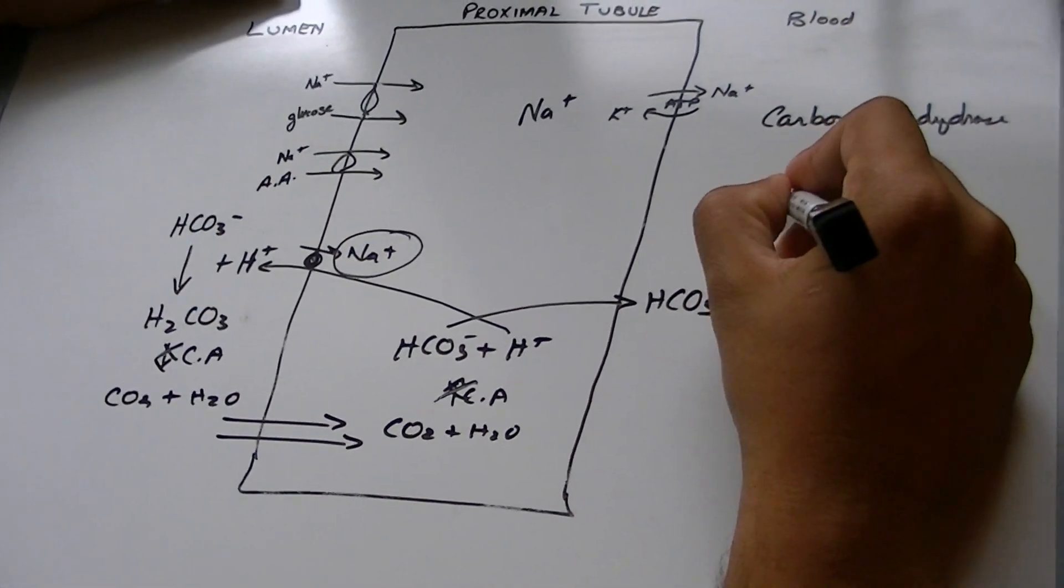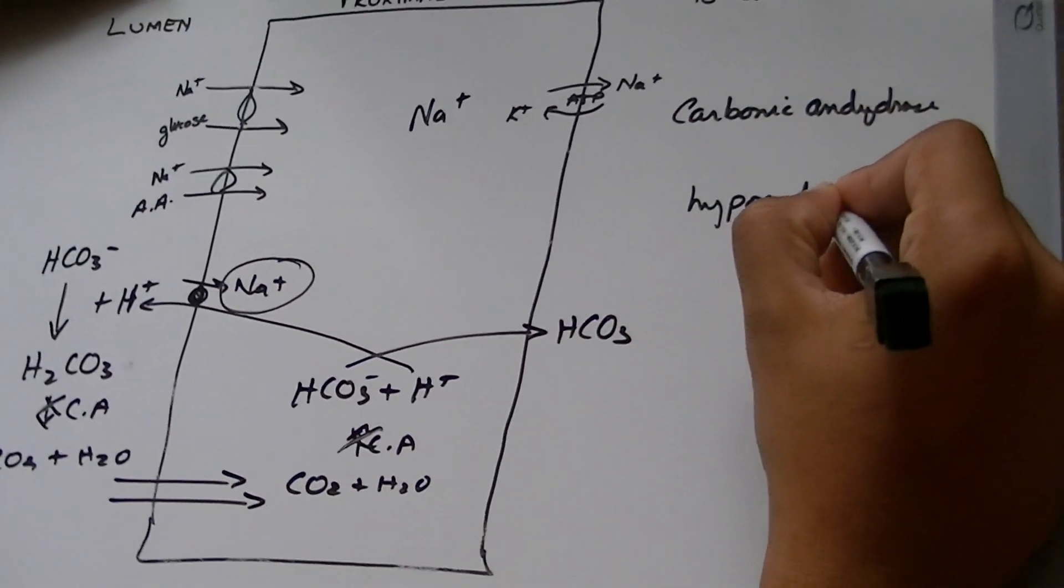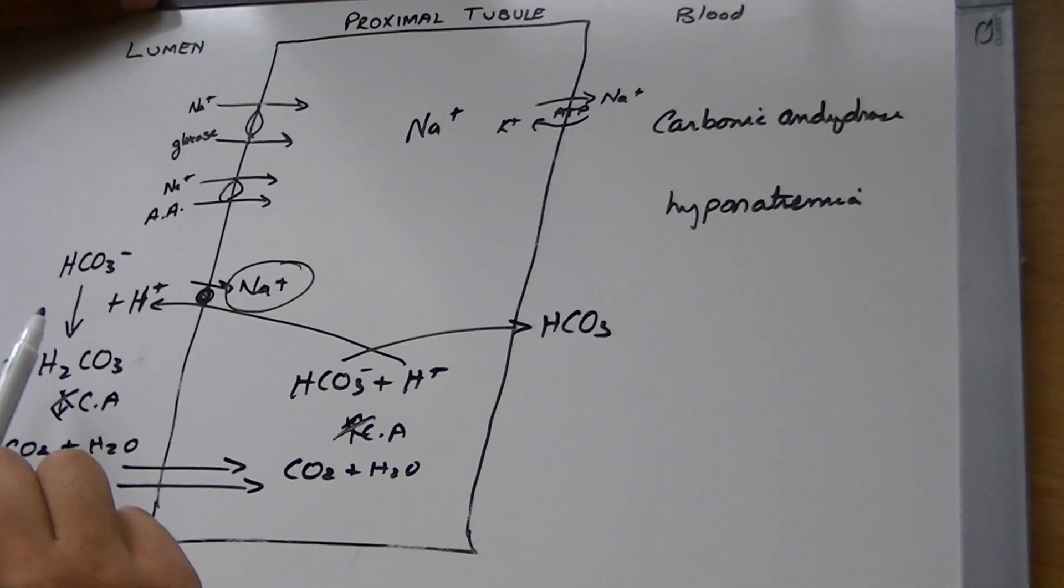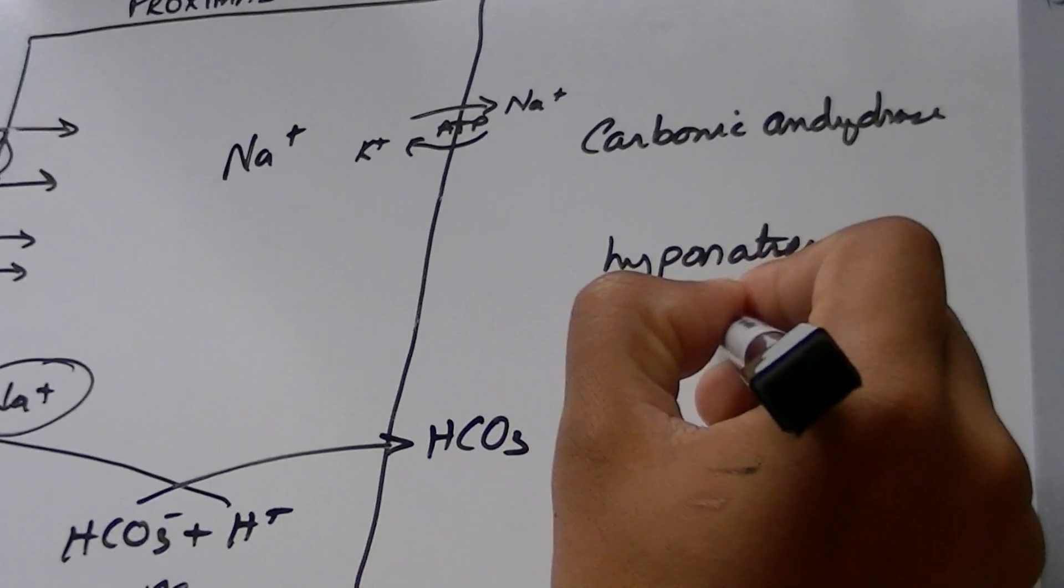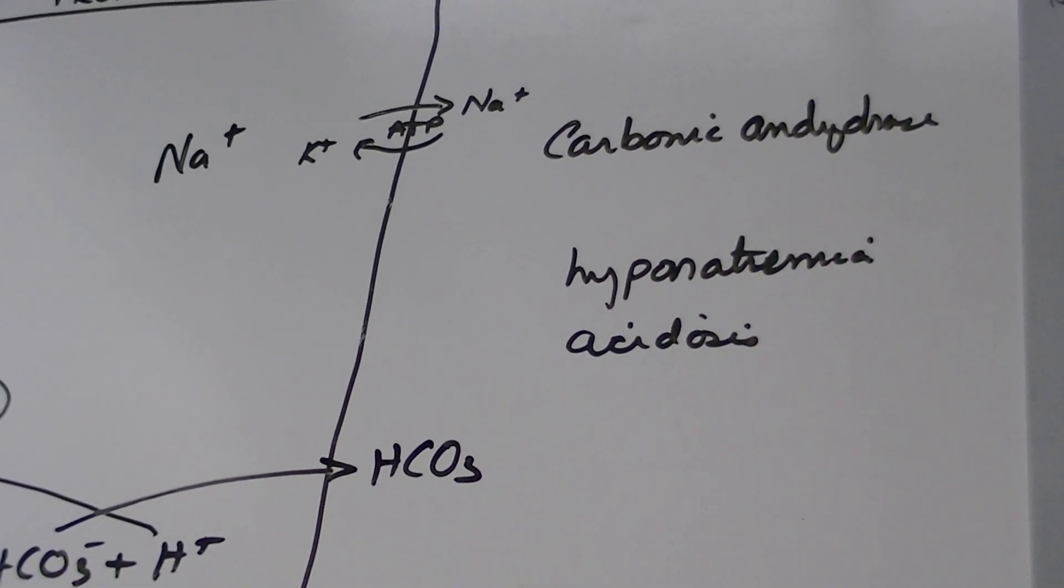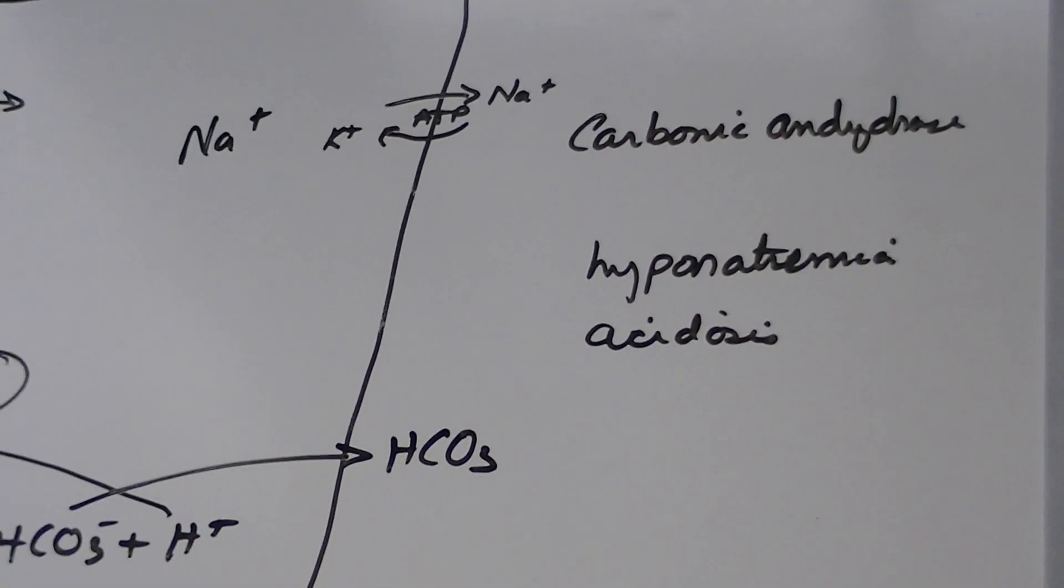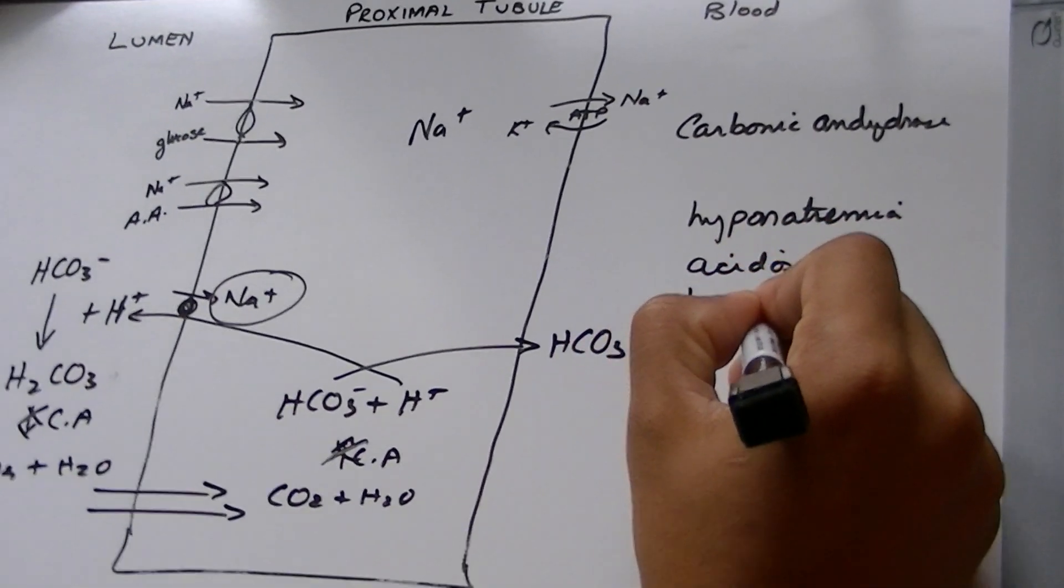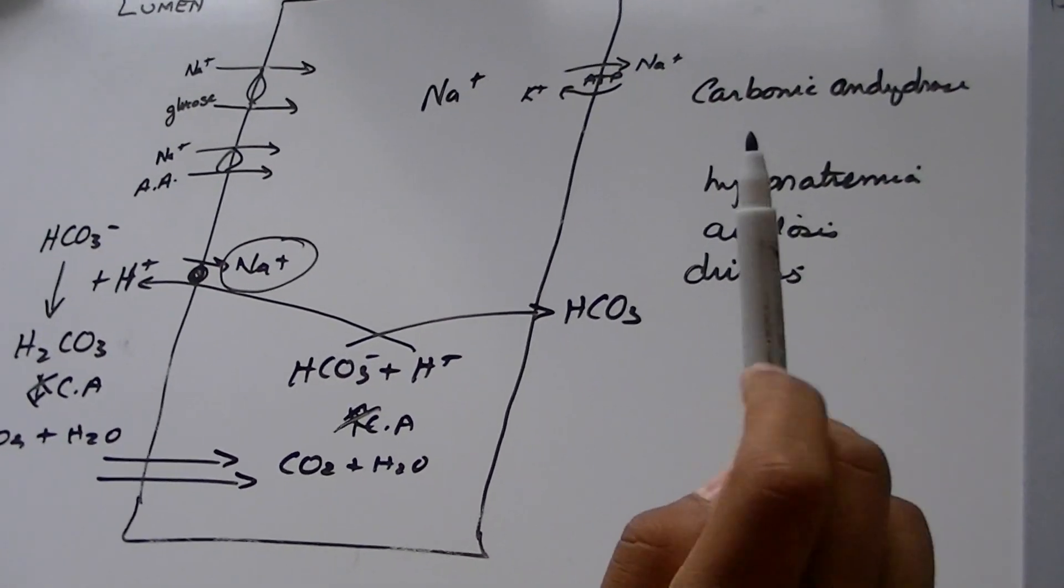Now, when you inhibit carbonic anhydrase, what you will in turn be inhibiting is this reabsorption of sodium. Now, what that causes is hyponatremia because you're not reabsorbing any of the sodium. You'll cause acidosis in the patient because you're losing all these bicarbonates, which would be alkaline. What else happens is, you lose water, you have diuresis, and you have hyponatremia acidosis.